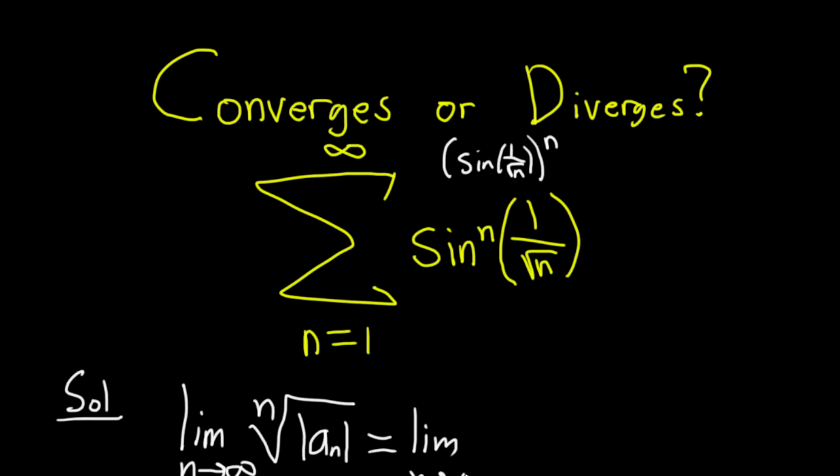So let's go ahead and replace a sub n with what it is for us in the problem here. So it'll be the absolute value of the sine to the nth power of 1 over the square root of n.